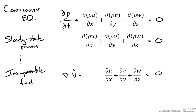So now we have three different ways of writing the continuity equation depending on the assumptions that we are making. Let's take a look at a problem where we want to determine the velocity of the fluid using the differential form of this continuity equation.